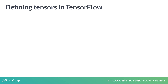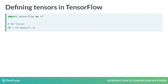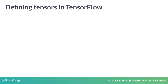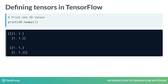Now that you know what a tensor is, let's define a few. We'll start by importing TensorFlow as TF, and then define 0, 1, 2, and 3-dimensional tensors. Note that each object will be a TF tensor object. If we want to print the array contained in that object, we can apply the .numpy method and pass the resulting object to the print function.